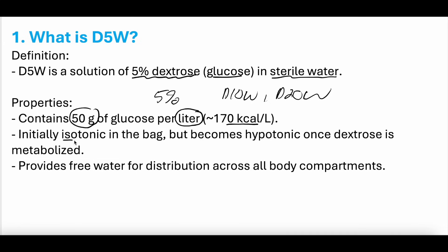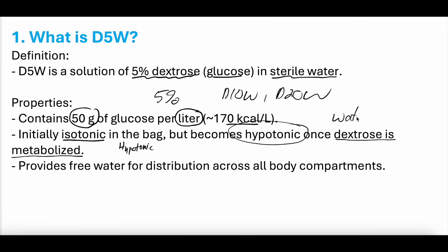D5W is initially isotonic at 252 milliosmoles per liter. You might ask: didn't we say it's hypotonic? That's because the glucose in it, when it first goes into the vein, makes it isotonic. But that dextrose is quickly metabolized when insulin is circulating, and then the solution becomes hypotonic — because what's left is literally sterile water, free water, H2O.